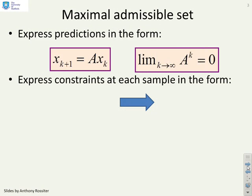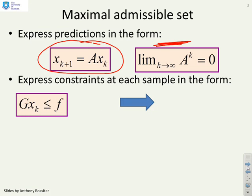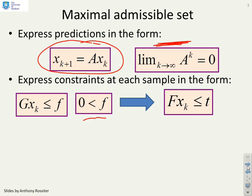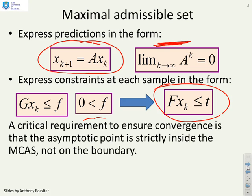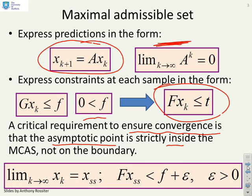When we did admissible sets, we had constraints of this form. Assuming a transition model xk+1 = Axk, we needed the limit as k goes to infinity of A^k to be 0. Constraints at each sample were expressed as Gx ≤ f, with f strictly greater than 0. Combining these, an admissible set of the form Fx ≤ t could be found. A critical requirement for convergence was that the asymptotic point be strictly inside the MAS — specifically, that F·xss is less than t plus epsilon, where epsilon is strictly greater than 0.